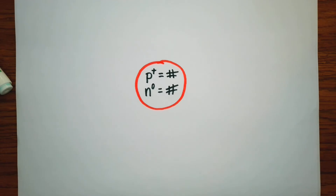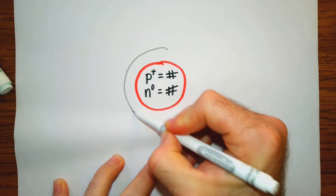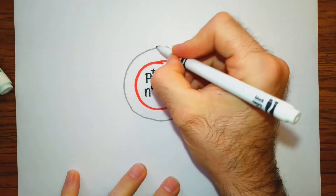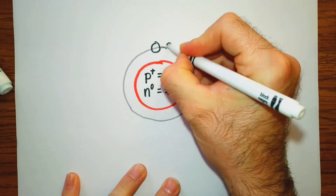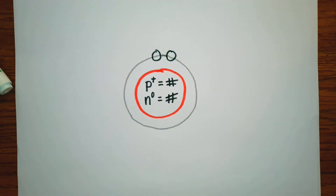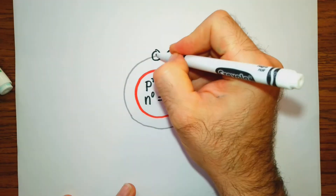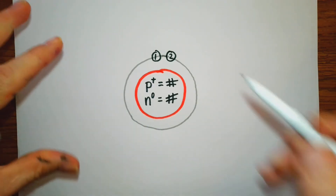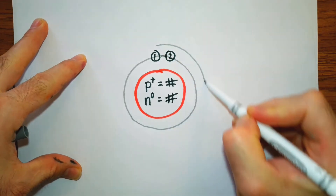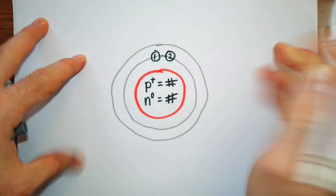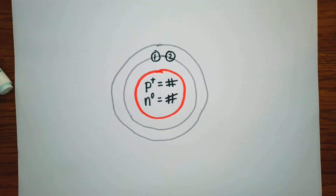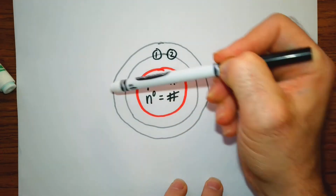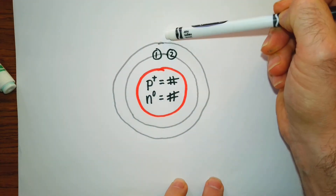For the first orbital, I'm going to draw a circle. It can have a maximum of two electrons — here's where our first electron would go and our second. For the second orbital, it can have a maximum of eight electrons. I like to fill what I call the four corners of the orbital before I start pairing them — I'll pair them on the fifth electron for that orbital.